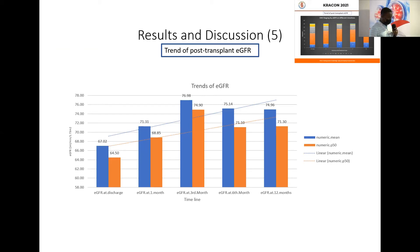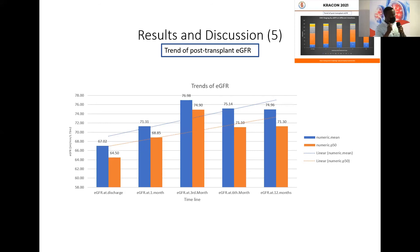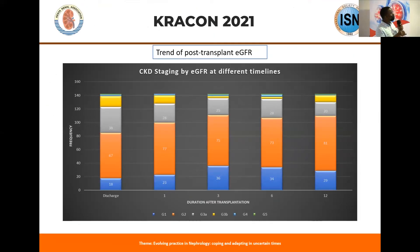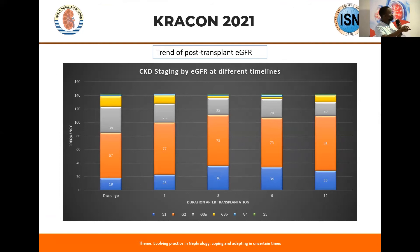We examined how eGFR moved through the months after transplantation. Most patients reached their peak eGFR at three months — suggesting that by three months, if a patient has not achieved a good eGFR, they may not achieve it. We staged eGFR at discharge, one month, three months, six months, and twelve months. Most patients were in grade two, with a few in grade 3A. Having most patients in grades one and two is a very good outcome.